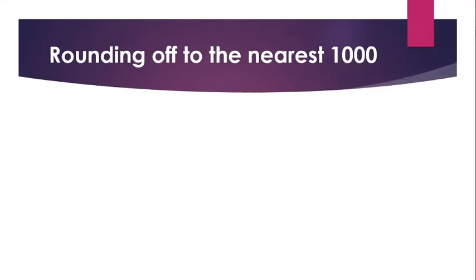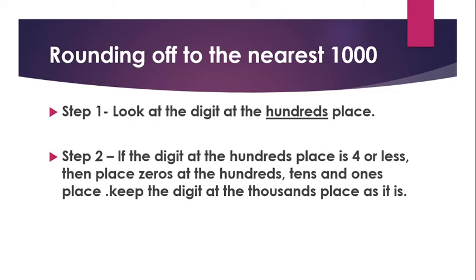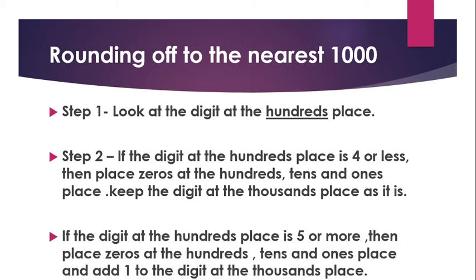Now, the rules for rounding off to the nearest thousand. Step 1: look at the digit at the hundreds place. Step 2: if the digit at the hundreds place is 4 or less, then place zeros at the hundreds, tens and ones place, and keep the digit at the thousands place as it is. If the digit at the hundreds place is 5 or more, then place zeros at the hundreds, tens and ones place and add 1 to the digit at the thousands place.